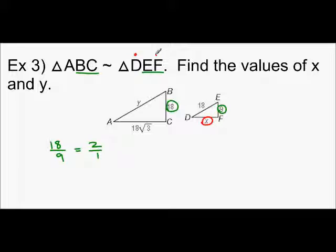DF goes with AC. AC is 18 times the square root of 3. Okay. So, we're going to have 2 over 1.